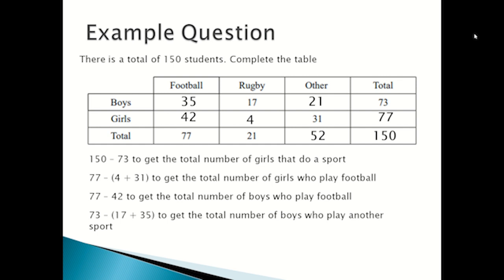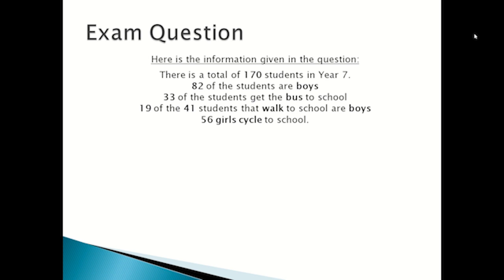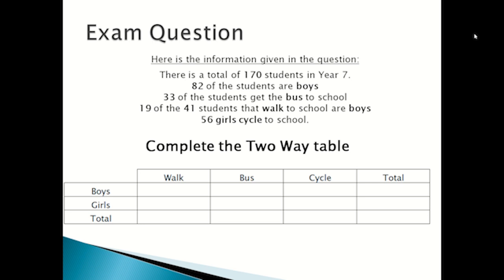So that's an example of completing a two-way table. Now we're going to look at an exam question. Here is the information given: there is a total of 170 students, 82 of the students are boys, 33 of the students get the bus to school, 19 out of the 41 students that walk to school are boys, and 56 girls cycle to school.